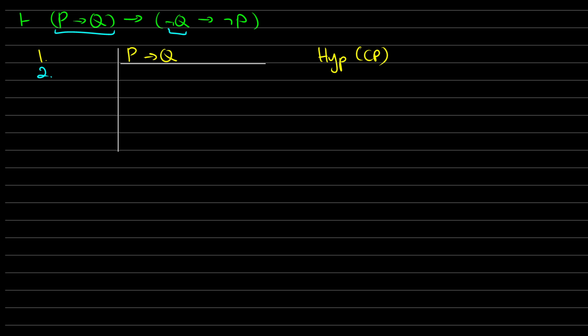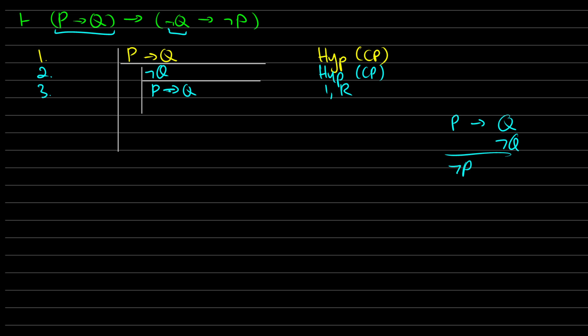In line three I'm going to reiterate P→Q so we can use it in the sub-proof — reiteration from line one. Now I have modus tollens: from P→Q and ¬Q we get ¬P. We've done this proof twice in this playlist — you can check out natural deductive proofs number two and the derivable rules videos. So in line four we write ¬P, from lines two and three by modus tollens (MT).